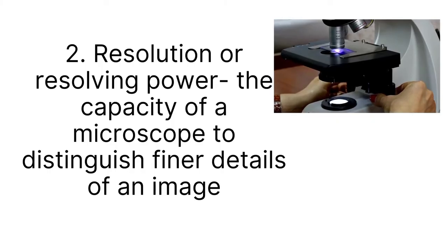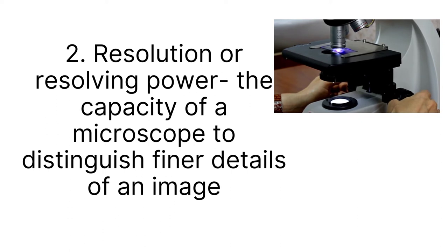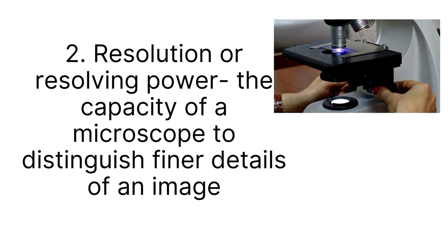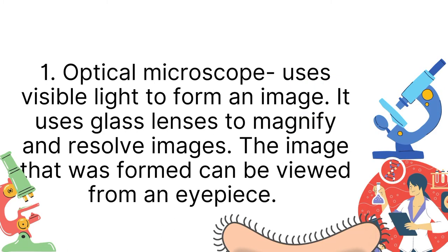Resolution or resolving power is the capacity of a microscope to distinguish finer details of an image. There are different types of microscope which differ in their magnification and their resolving power. First is the optical microscope. This is composed of visible light to form an image. It uses glass lenses to magnify and resolve an image. Images can be formed and viewed through the use of the eyepiece. It is composed of two types: compound and stereo microscope.